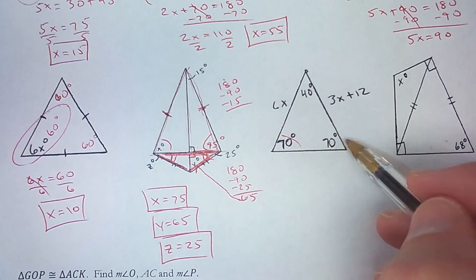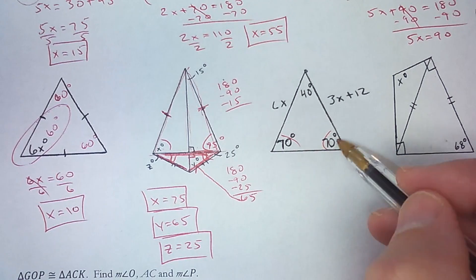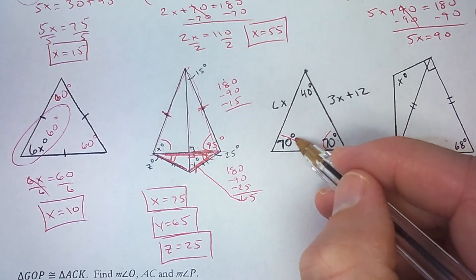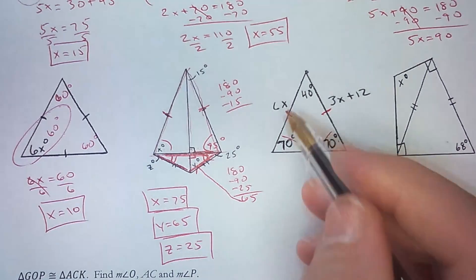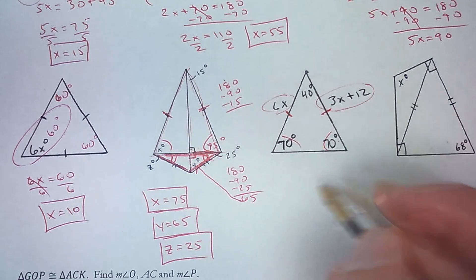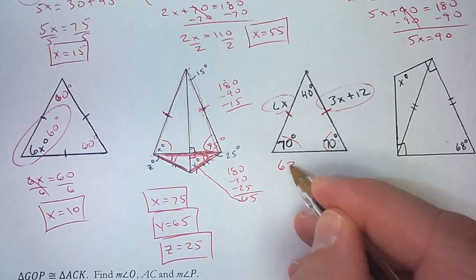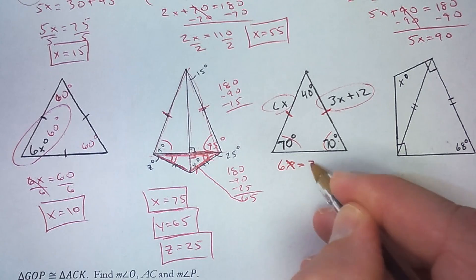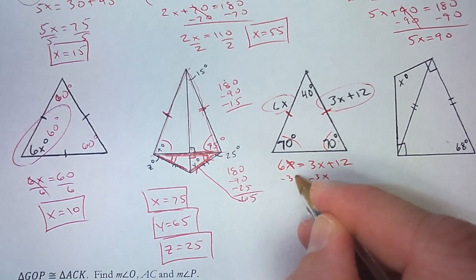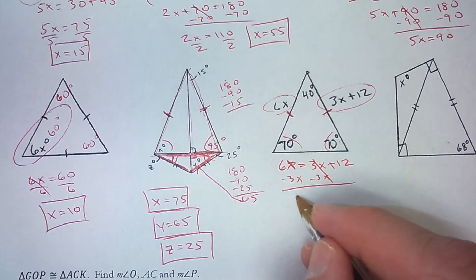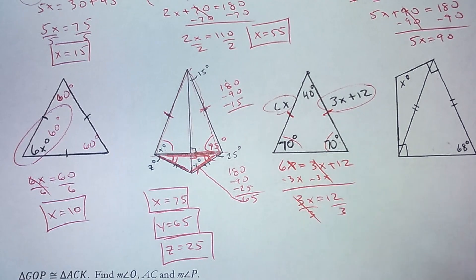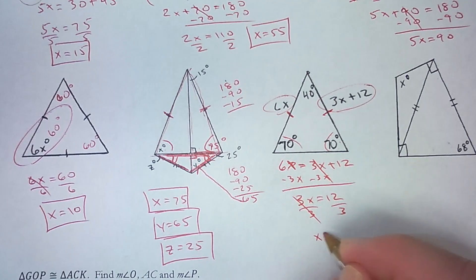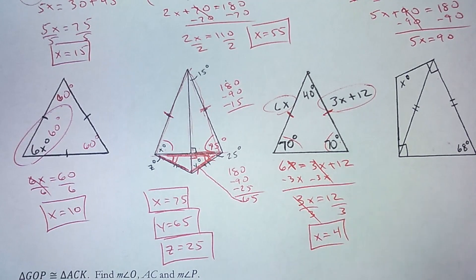Here, I've got a pair of congruent angles. And anytime a triangle has congruent angles, the sides across from them are congruent. So that tells me 6x equals 3x plus 12. So I'll subtract 3x and get 3x equals 12. And divide by 3 and 12 divided by 3 is 4.